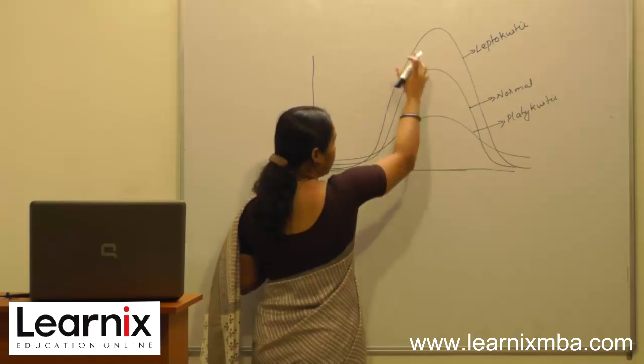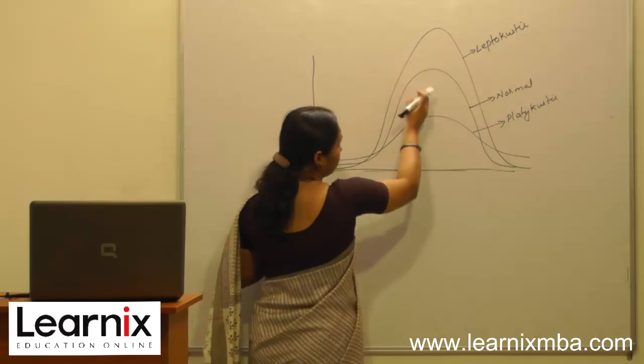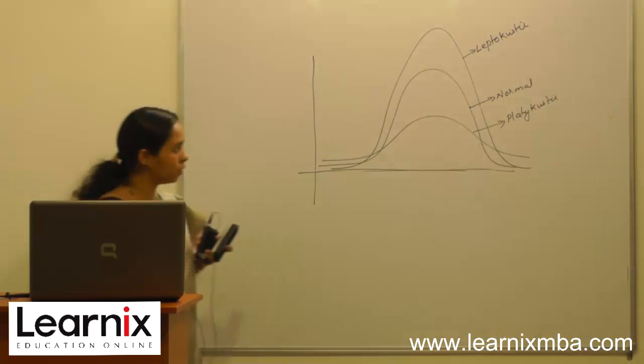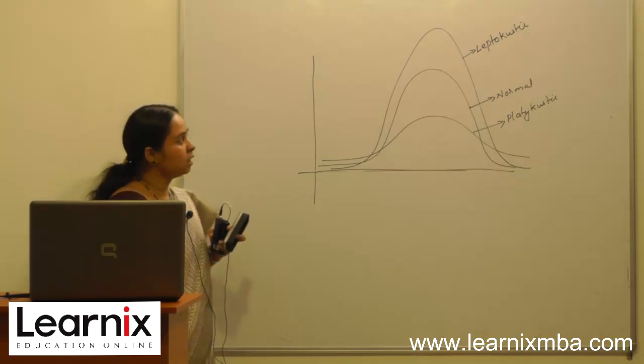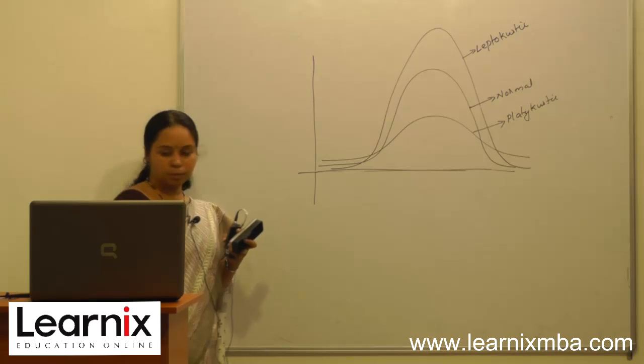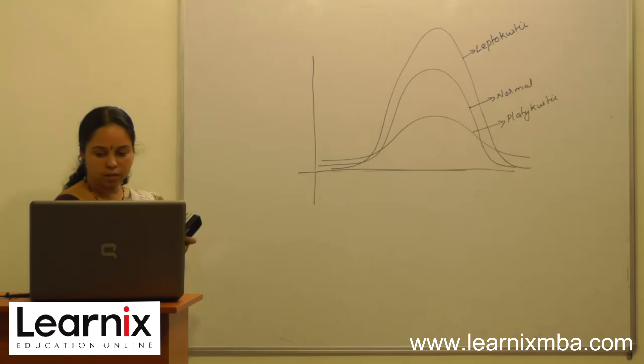If it is very peak, more than normal curve, then it is called leptokurtic curve. Based on the peakedness or flatness, it is classified into three types: leptokurtic, platykurtic, and normal curves.